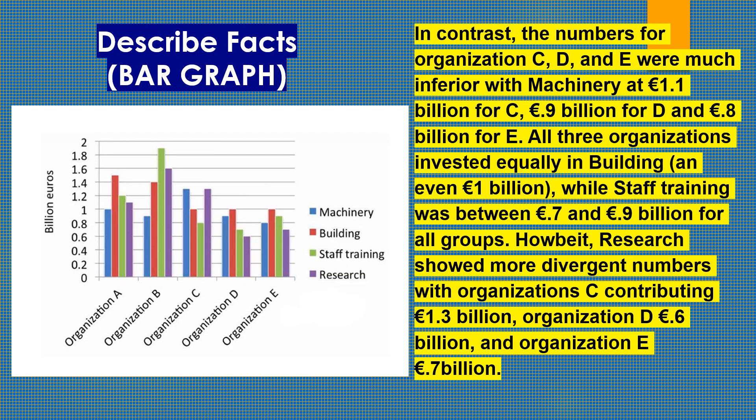In contrast, the numbers for organizations C, D and E were much lower. Machinery stood at 1.1 billion euros for C, 0.9 billion for D, and 0.8 billion for E. All three invested equally in building, while staff training ranged between 0.7 and 0.9 billion euros. Research showed more divergent numbers: organization C contributed 1.3 billion euros, D contributed 0.6 billion, and E contributed 0.7 billion euros.